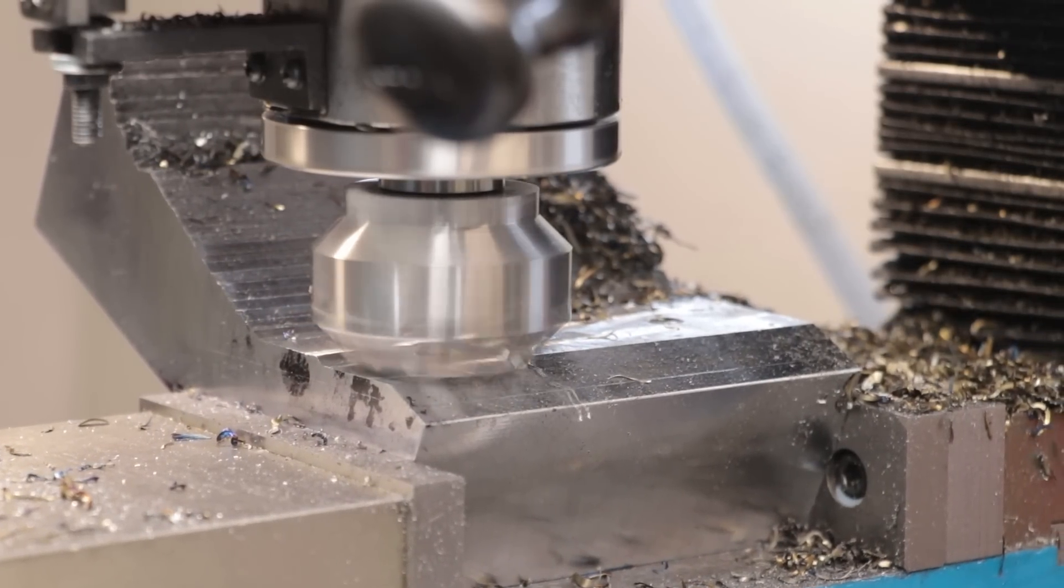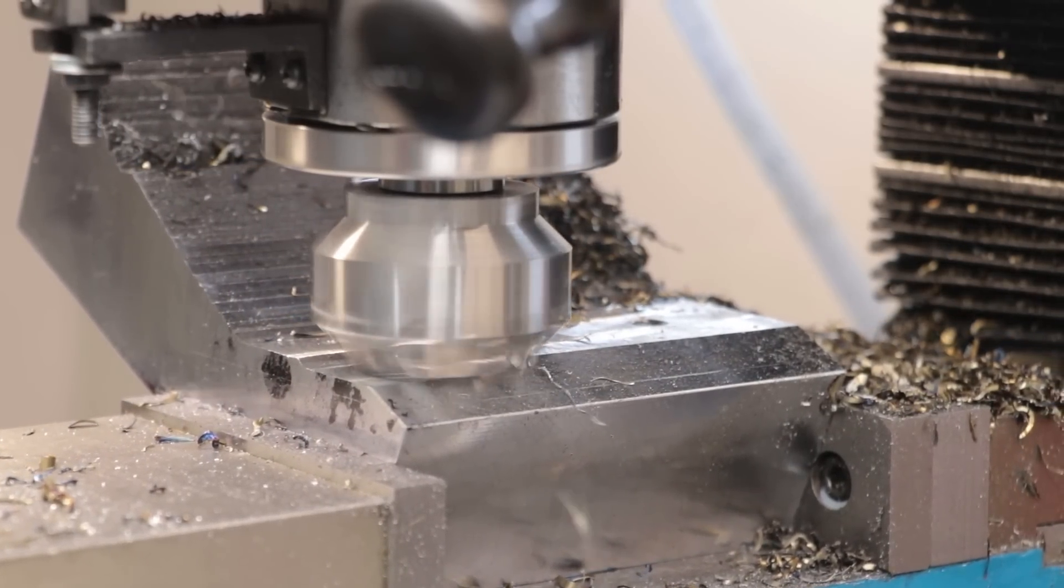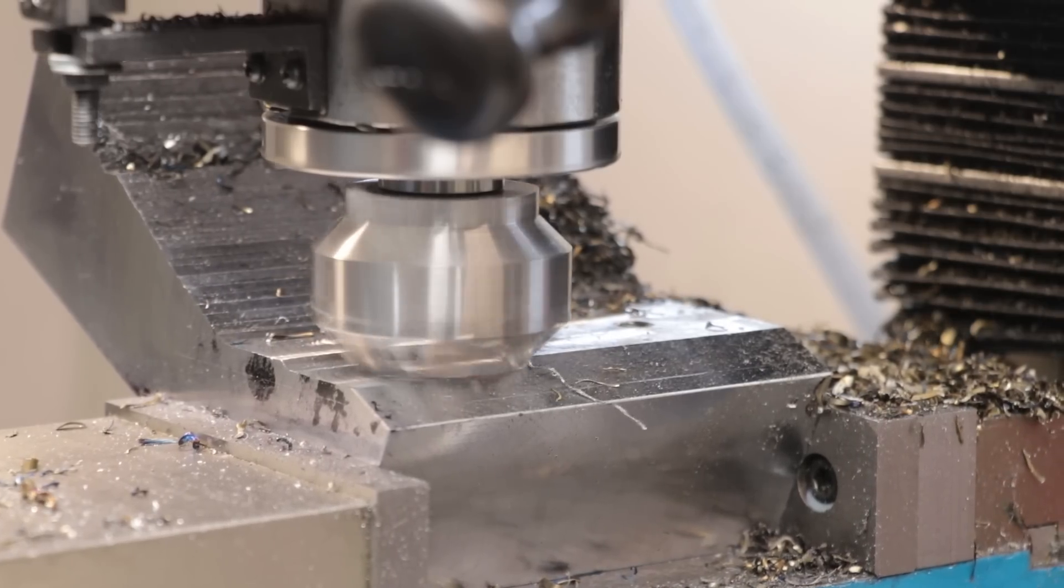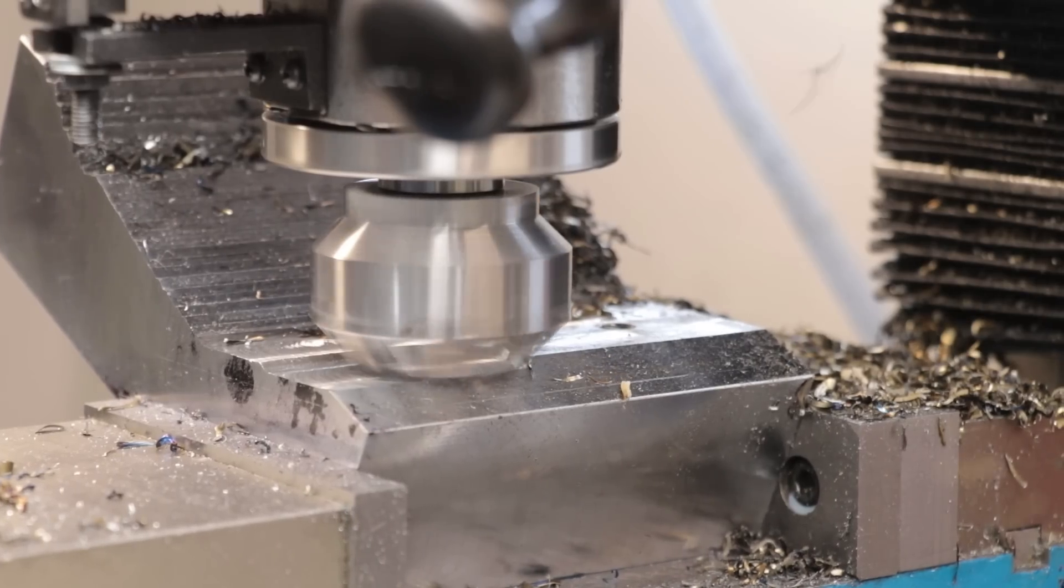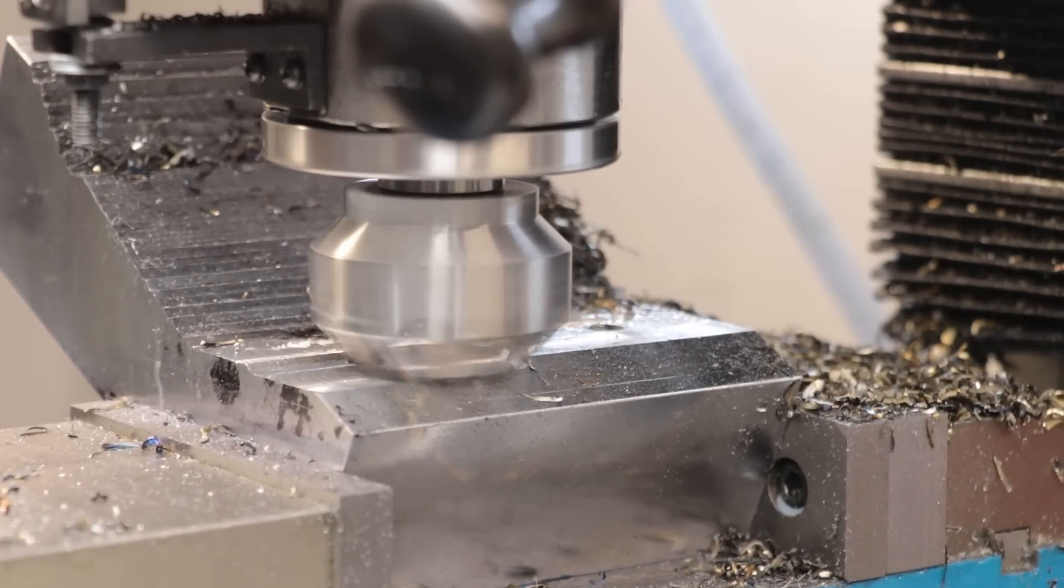It can easily do 2-3mm depth of cut in steel, which is a huge improvement over say an end mill or fly cutter, at least in terms of total volume of metal that we can remove at once.